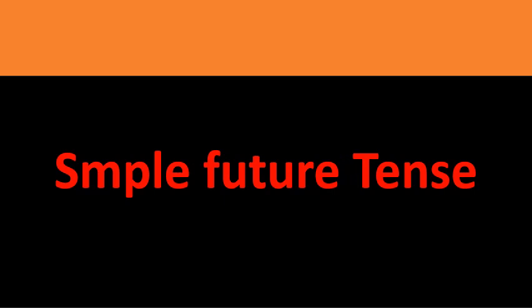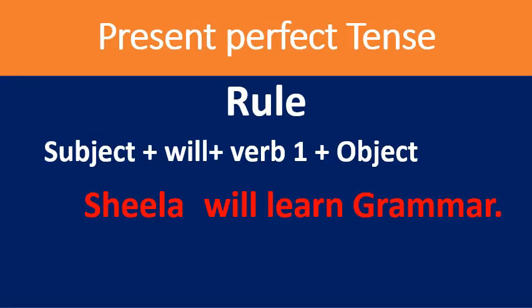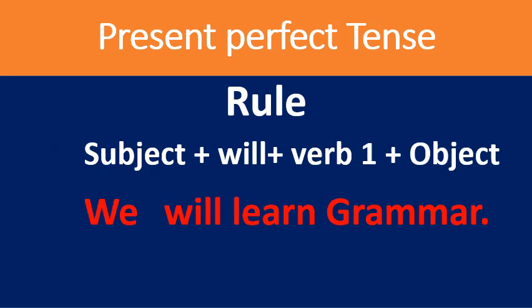Now I take you to simple future tense. When do you use simple future tense? Simple future tense is used to refer to events that will happen in the future. The rule is: subject + will + verb in the first form + object. For example: 'Sheila will learn grammar' — 'Sheila' is subject, 'will learn' uses the first form, 'grammar' is the object. Also: 'We will learn grammar.' 'They will learn grammar.'